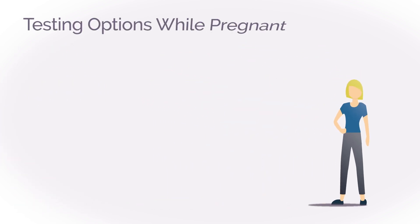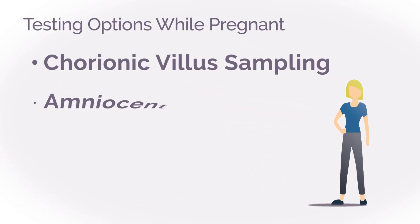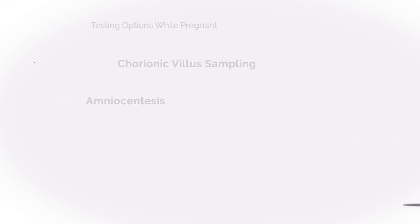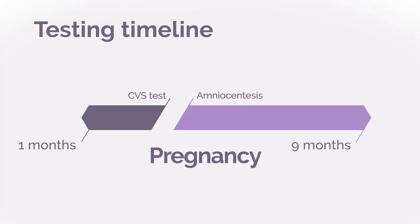If you are currently pregnant, an option is to have diagnostic genetic testing during pregnancy, either a chorionic villus sampling, CVS, or an amniocentesis, to test the pregnancy for the condition. A CVS is performed at the end of the first trimester, and an amniocentesis is performed at the beginning of the second trimester.